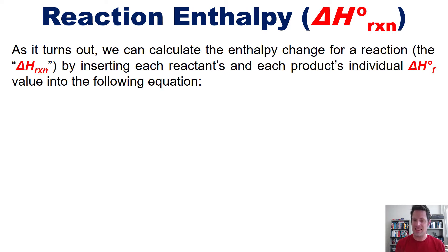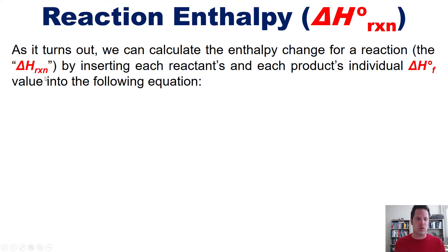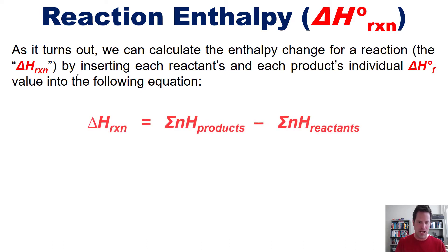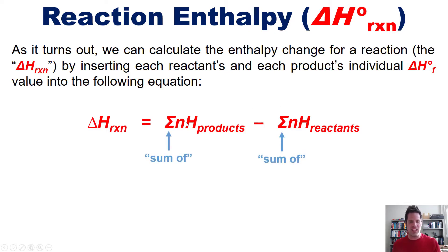We can calculate the enthalpy change for a reaction — the delta H sub rxn, where rxn stands for reaction — by inserting each reactant's and each product's individual delta H sub F values into the following equation, where the sigma symbols represent sums and the n terms represent the coefficients in the balanced chemical equation.